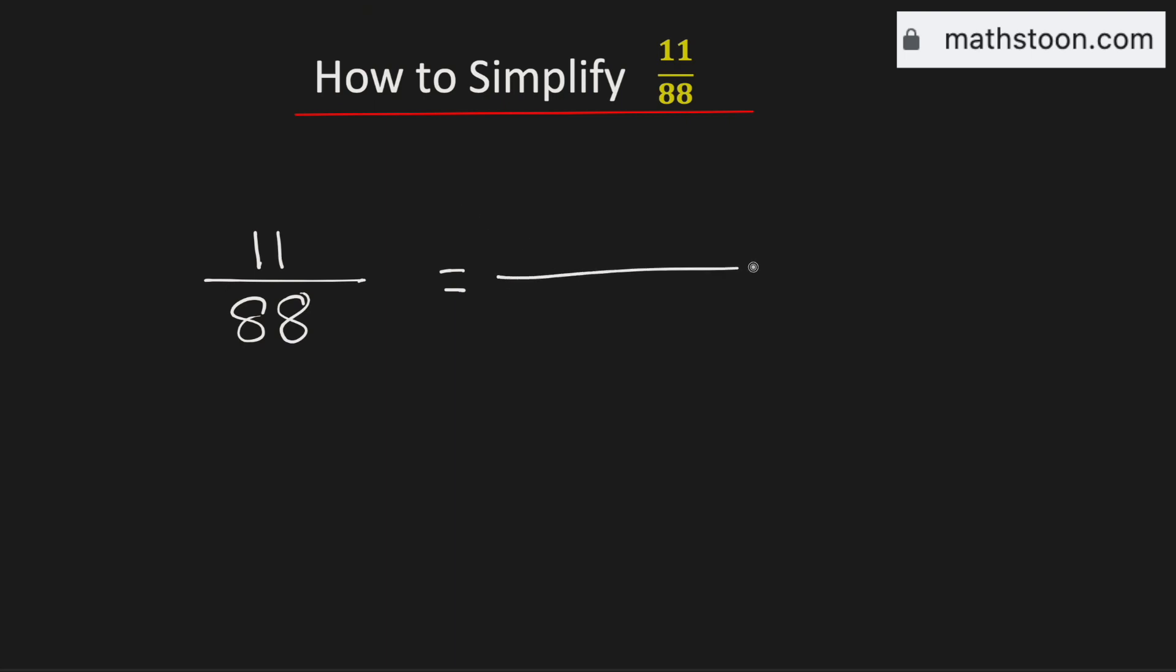So to simplify it, we will divide both the numerator and the denominator by 11. By doing so, we will get 1 in the numerator and 8 in the denominator.